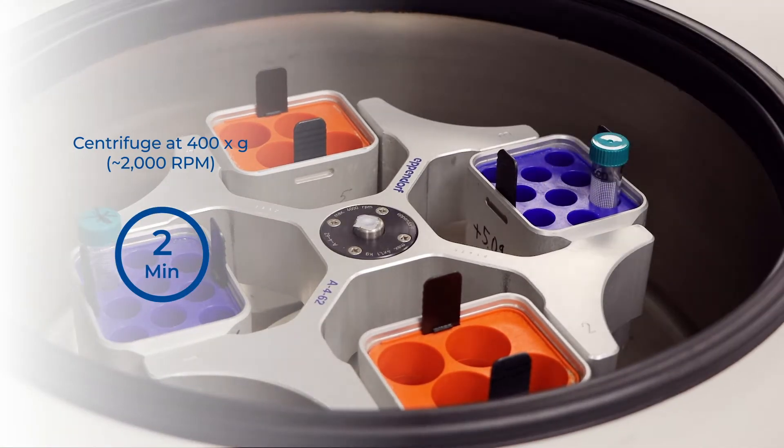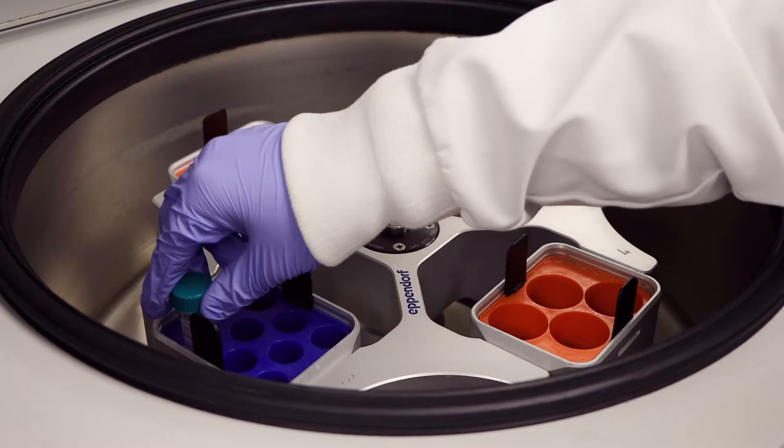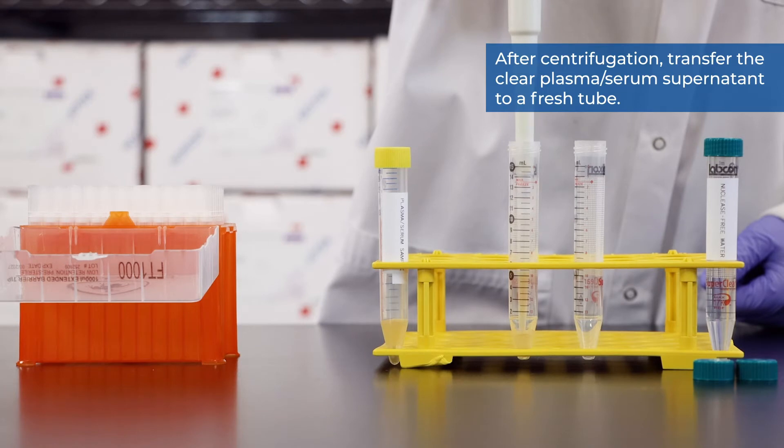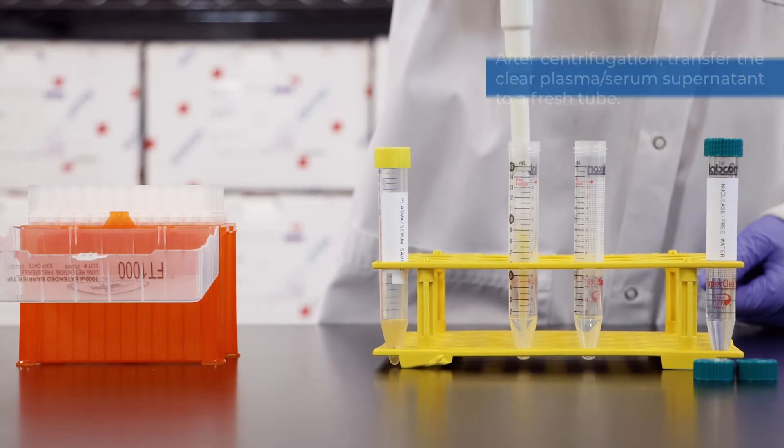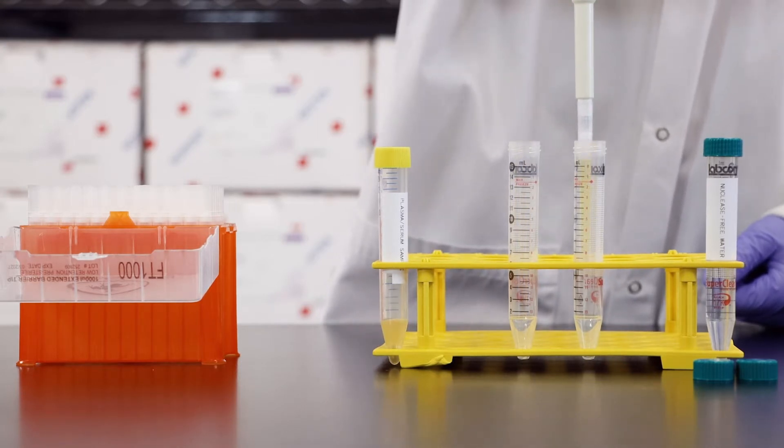Centrifuge for 2 minutes at 400g or 2000 RPM. After centrifugation, transfer the clear plasma serum supernatant to a fresh tube. Your cell-free plasma is now ready for exosome purification.